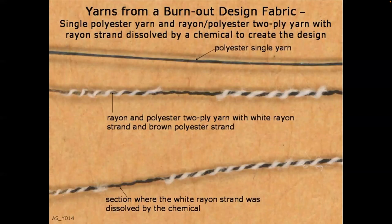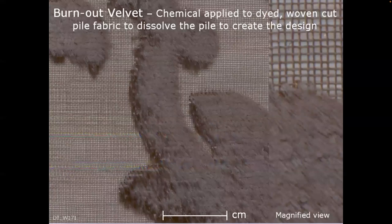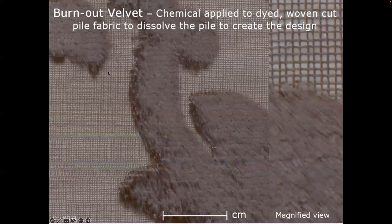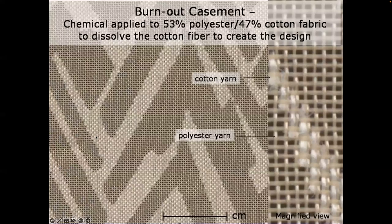This is another burnout design — a polyester yarn wrapped with rayon where the burnout dissolved the rayon and the polyester remains. This is a velvet with a burnout design — the velvet piles were dissolved in certain sections of the fabric, exposing the base. Another example has cotton and polyester yarns where the cotton yarns are dissolved in certain sections, so those areas are all polyester and other sections are cotton and polyester together.